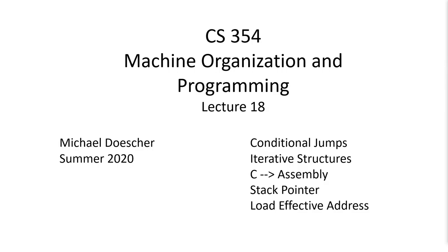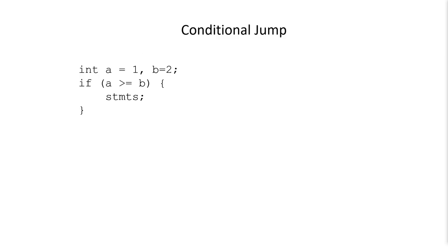So: conditional jumps, loops — we're going to be looking at some C code and turning it into assembly and walking through it. And then the last few things: the stack pointer, which is central for function calls, and the load effective address command. I want to start off with a review problem to introduce the idea of conditional jumping.